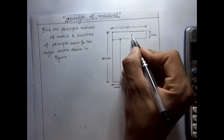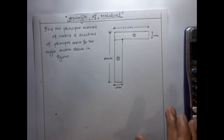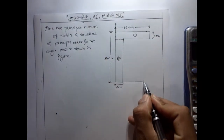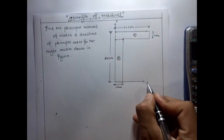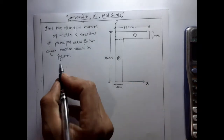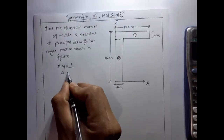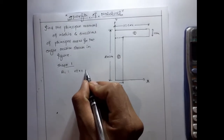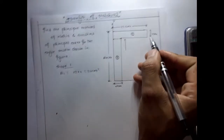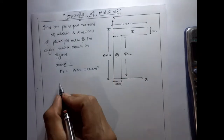The angle section consists of rectangles. For shape one, the area A1 is 24 cm² — that is, the height is 18 cm and the width gives an area. Shape two has area A2 equal to 36 cm².